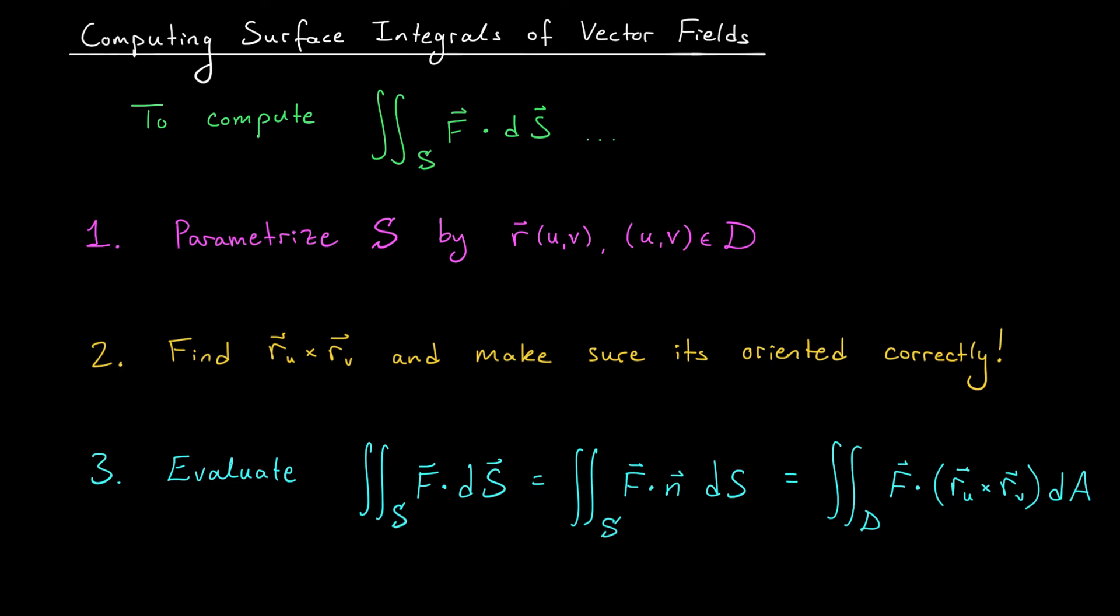Secondly, we need a vector that points orthogonally to our surface. So we compute r_u cross r_v. Of course, we have to be sure that it's oriented correctly. This is important. If I ask you for upward orientation, this vector had better be pointing upward. If I ask you for inward orientation, this vector had better be pointed inward. We'll see how we can confirm this in the examples.